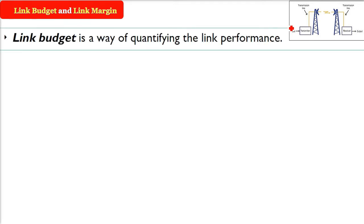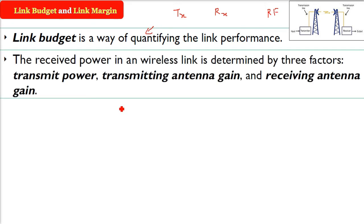Link budget and link margin. Whenever we have RF or radio frequency communication, link budget is a way of quantifying the link performance. If you have a transmitter and a receiver, the link needs to be established. Link budget is a way to quantify whether this link has good performance or not.